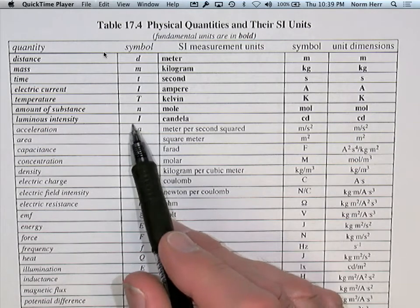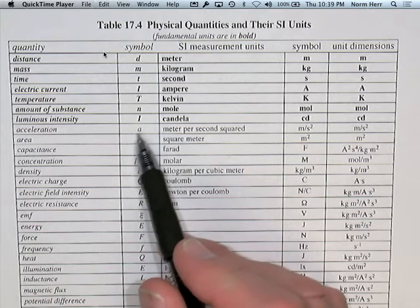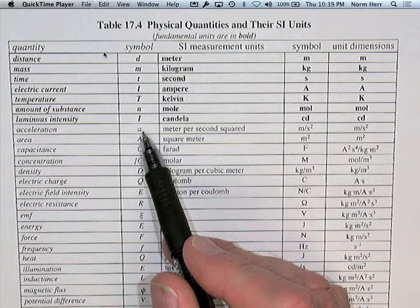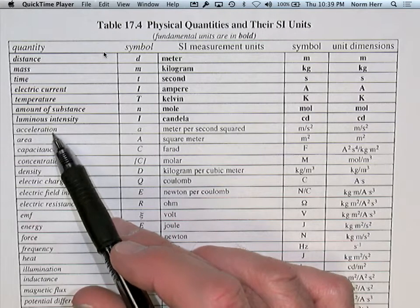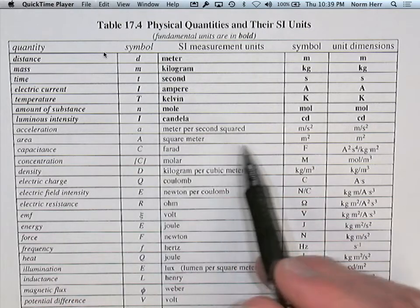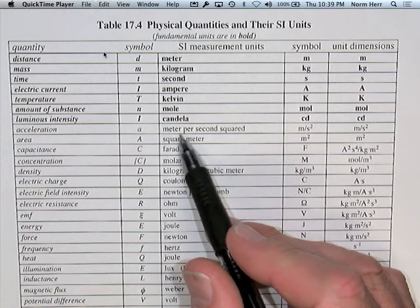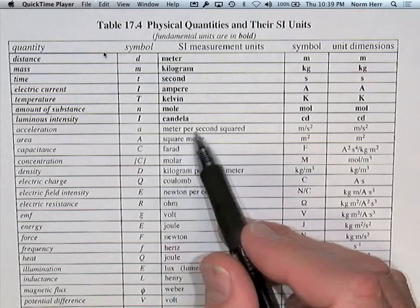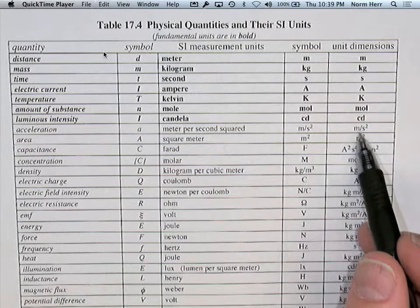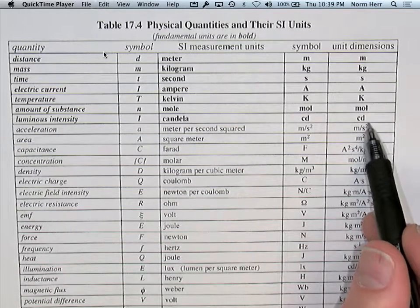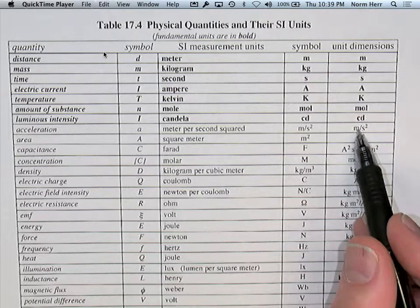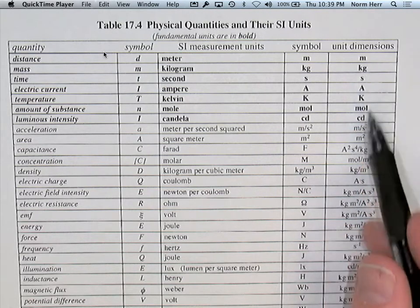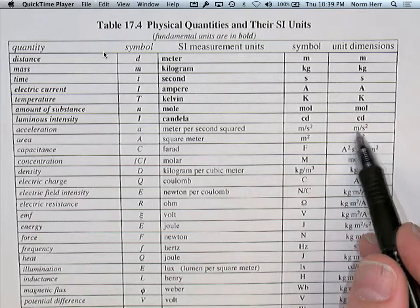By contrast, the terms below this line are not written in bold because these are derived units — units derived from the fundamental units. For example, acceleration has units of distance per time squared, expressed in SI units as meters per second squared. This incorporates the unit for time and the unit for distance, so it is derived from length per time squared.